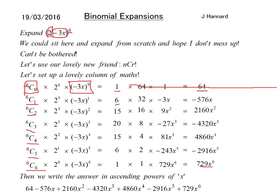And then, just to finish off, the examiner always likes it in ascending powers of X. So you'd start with this and end with this in your little answer at the bottom. So you end up with 64 minus 576X plus 2160X squared minus 4320X cubed plus 4860X to the 4 minus 2916X to the 5 plus 729X to the 6. And that is that.